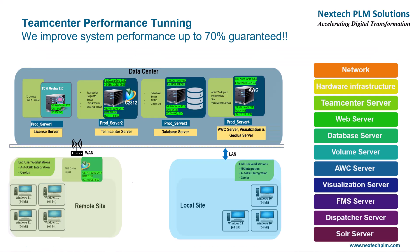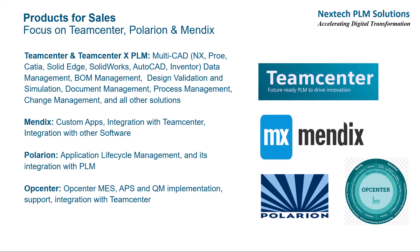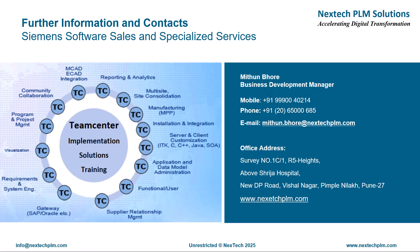Our services portfolio also includes one of the key offerings: Teamcenter Performance Tuning. We help you improve your system performance by up to 70% by tuning various components in the system. Apart from providing specialized services, we also sell Siemens products primarily focusing on Teamcenter and Teamcenter X, Polarion, Mendix, Opcenter, and so on. We help customers get the right products and capabilities by understanding their business requirements precisely and at reduced cost. You can reach out to us for any of your Siemens software, services, and solutions business requirements.